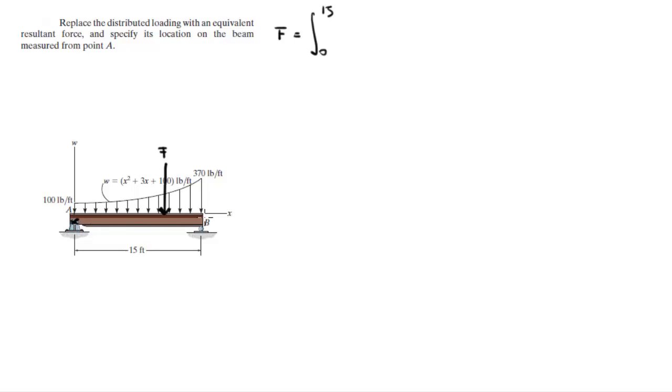This is 0 and here's 15 of the function which is x squared plus 3x plus 100 dx. And this is equal to x cubed over 3 plus 3x squared over 2 plus 100x